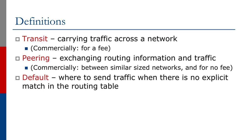Firstly, there's transit. Transit is a service where a network operator allows traffic to pass through their network to the rest of the internet. This is a chargeable service. A transit customer pays the network for this service, and the network may in turn need to buy transit from another larger network to have connectivity to the whole internet.